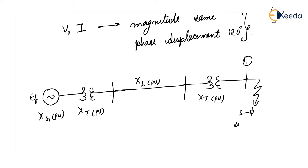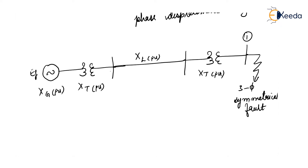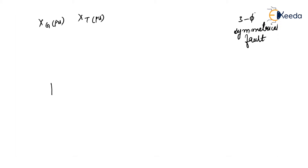This is a 3-phase symmetrical fault. We analyze what happens. We assume there is no load connected prior to the fault, so the current flowing in the transmission line is zero. First, we will draw the reactance diagram for finding the fault current.